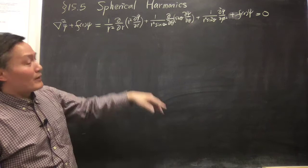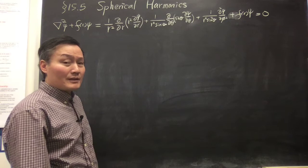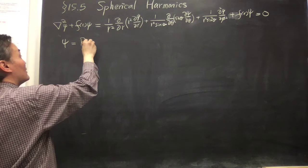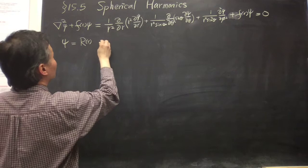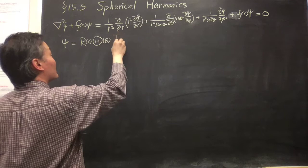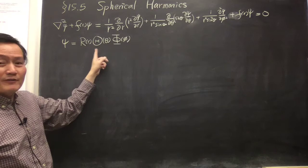In the partial differential equation chapter, we use the separation of variables method to solve it. We can write psi as a function of R, theta, and phi — so three functions: R, theta, and phi. We use that form of solution, or a summation of solutions of this form, because this is a linear equation.